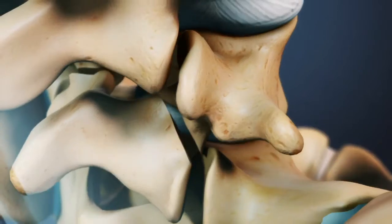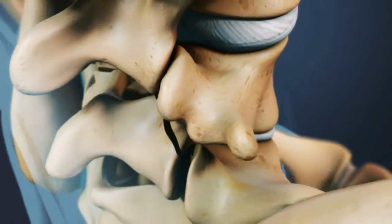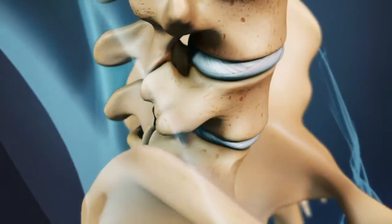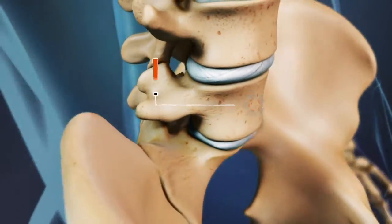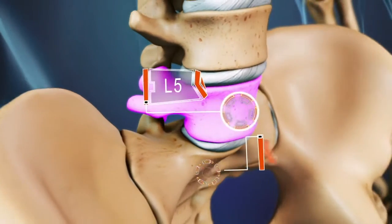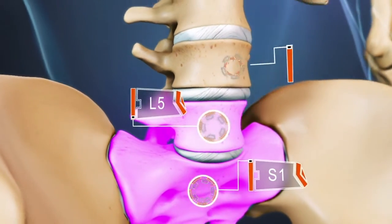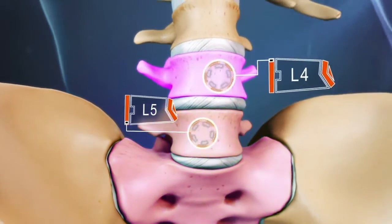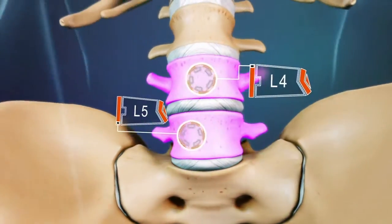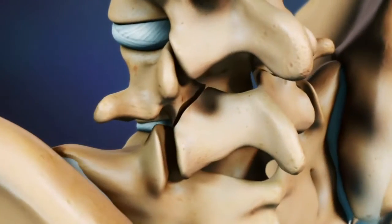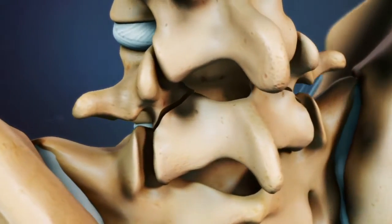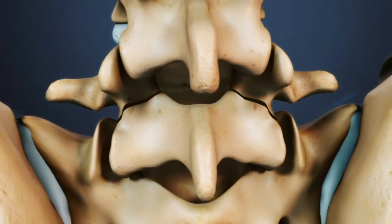Fractures of the pars interarticularis, known as spondylolysis, usually occur at the L5-S1 level and rarely at L4, L5, or higher. They can occur on one side of the vertebra or on both.